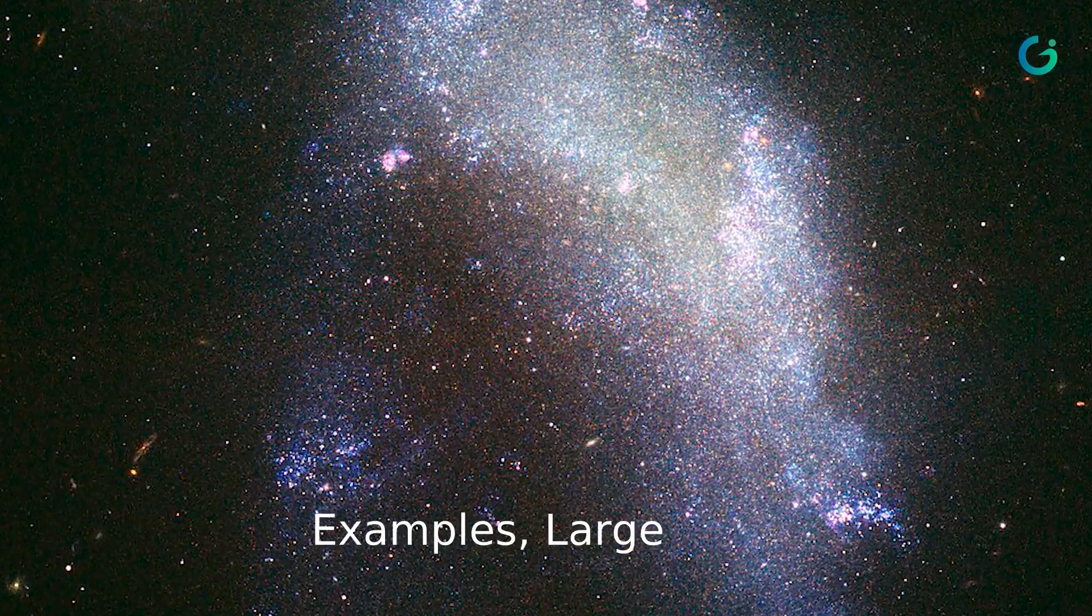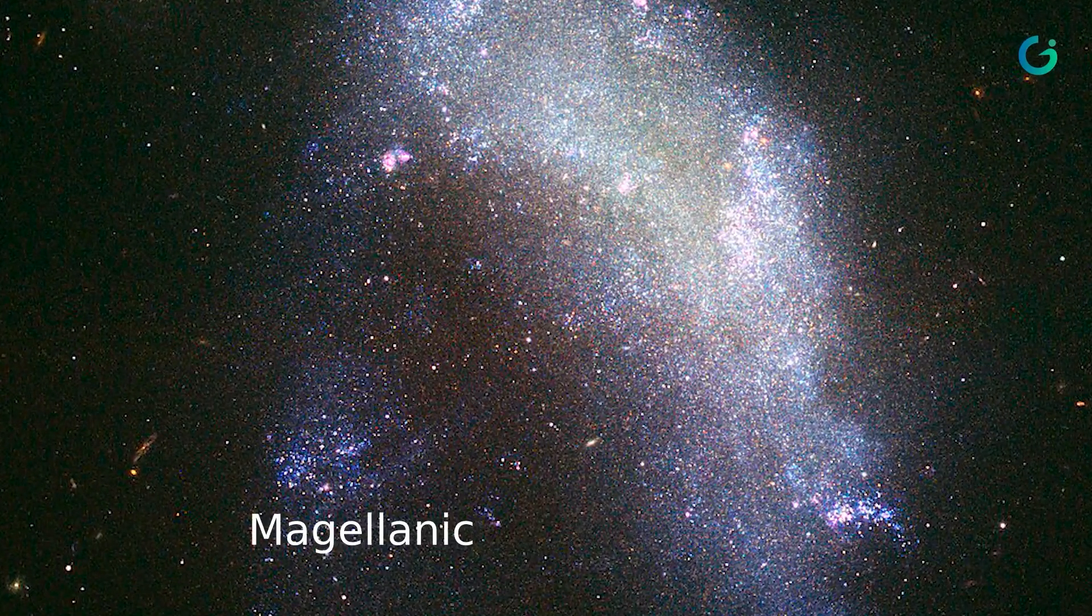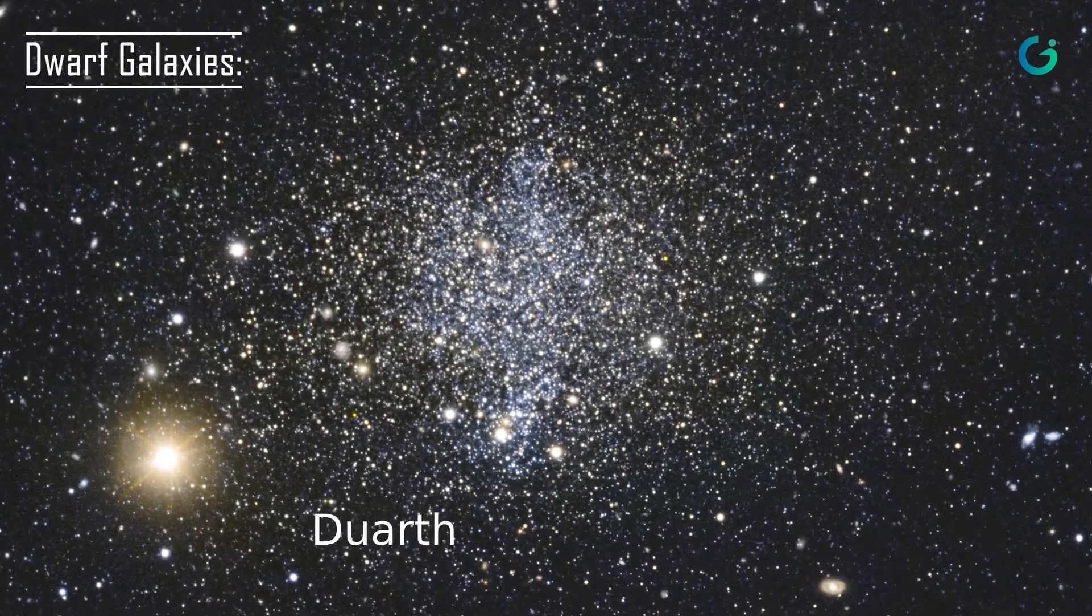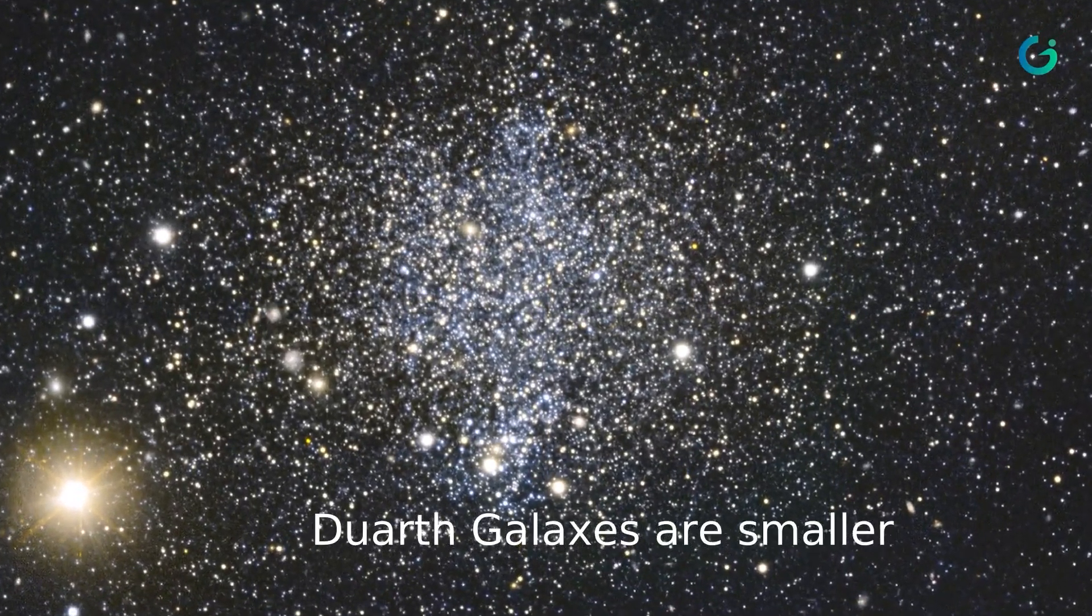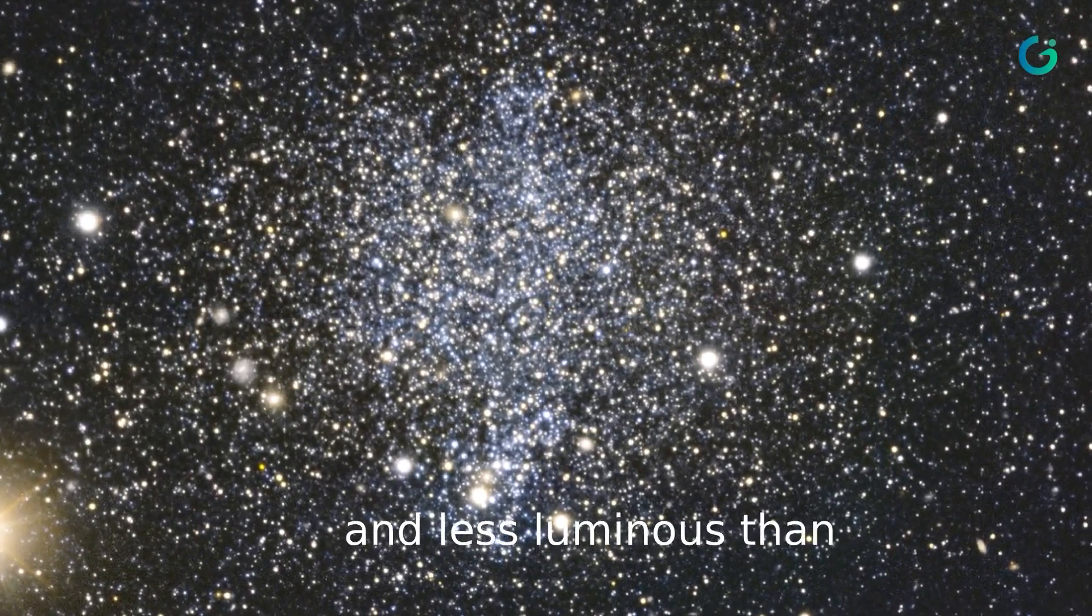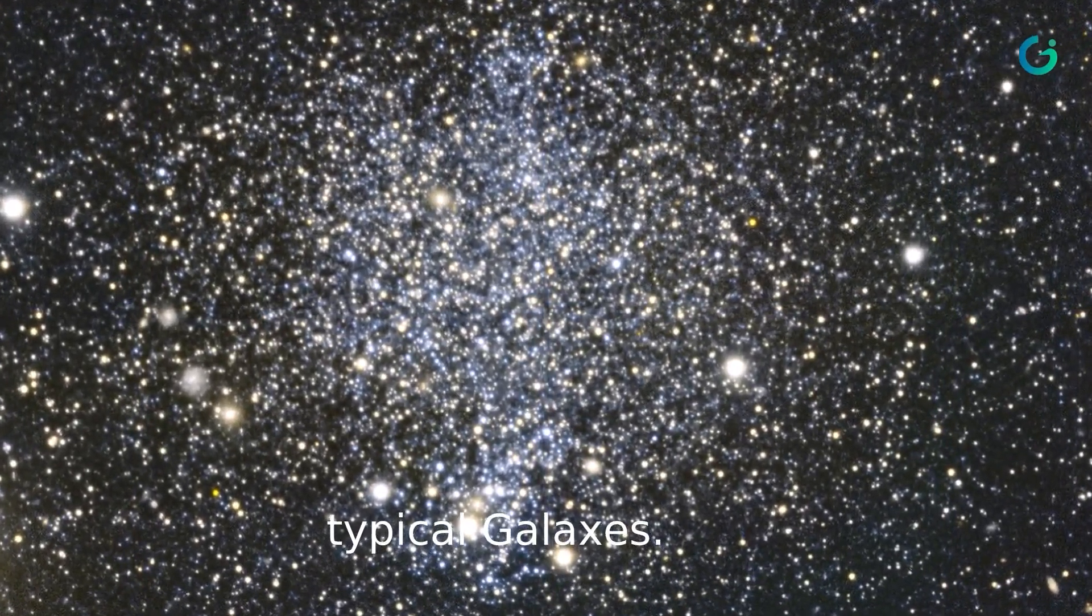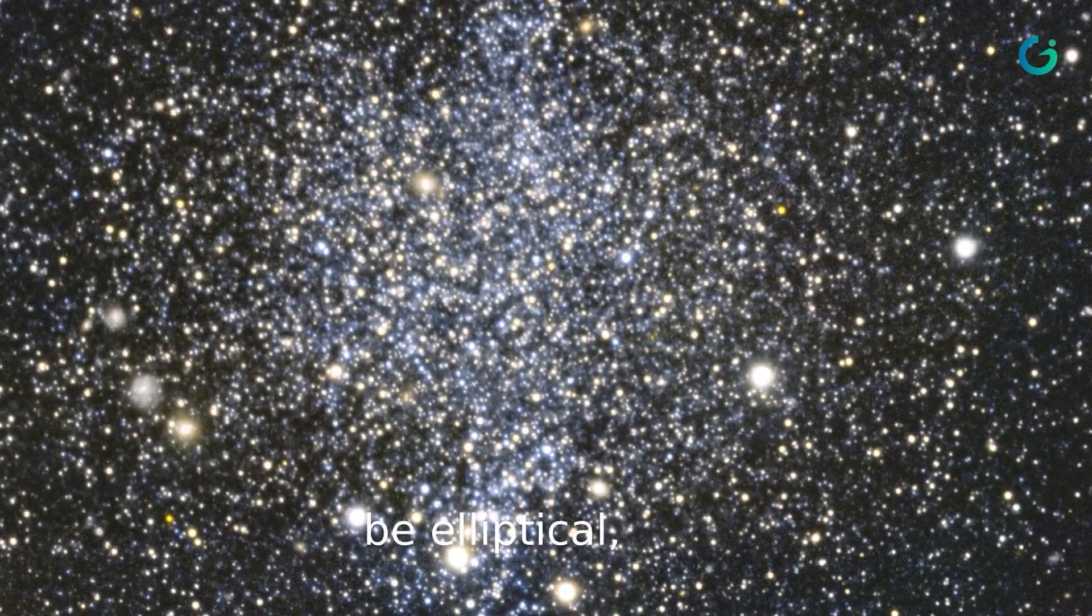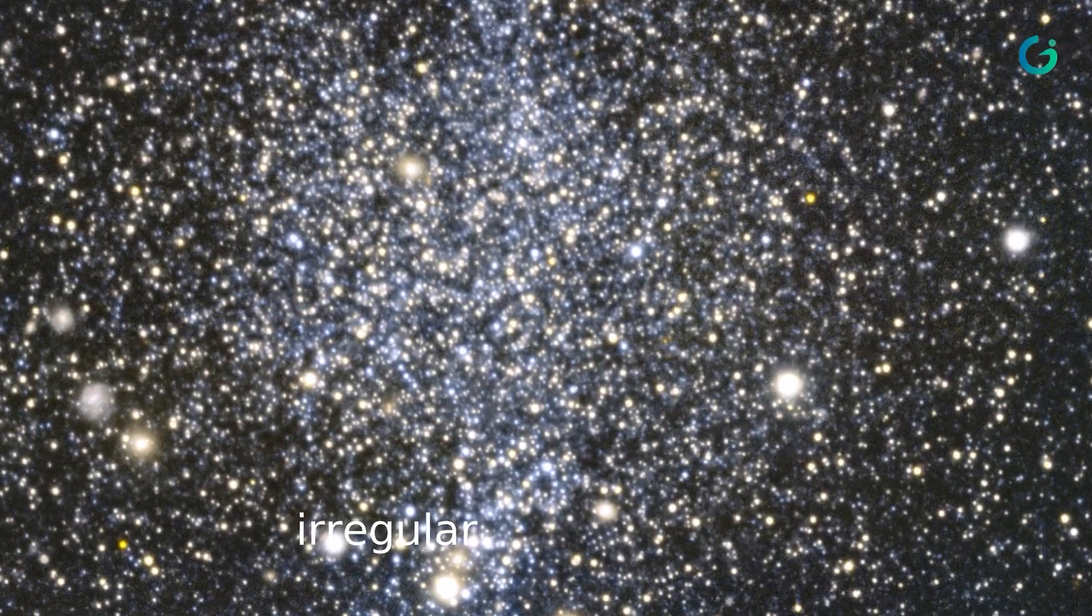Dwarf galaxies are smaller and less luminous than typical galaxies. They can be elliptical, spiral or irregular in shape. Examples include the Draco Dwarf and Fornax Dwarf.